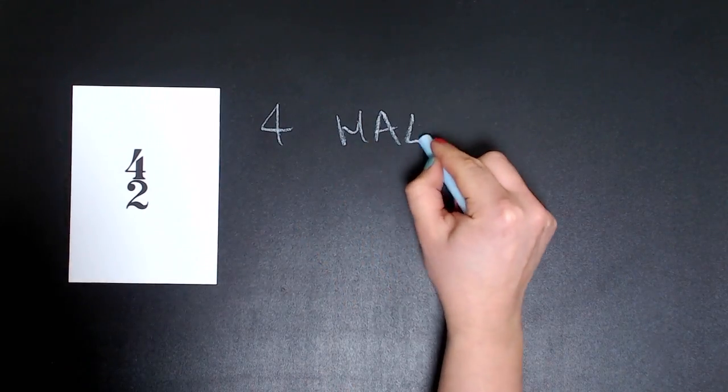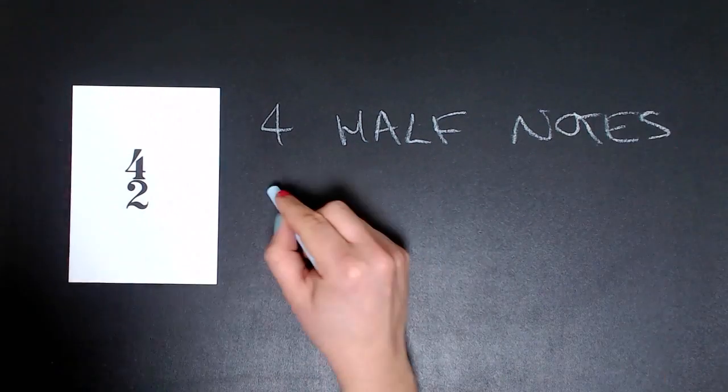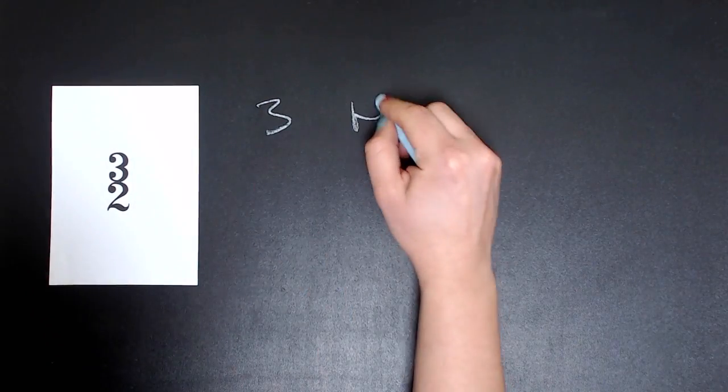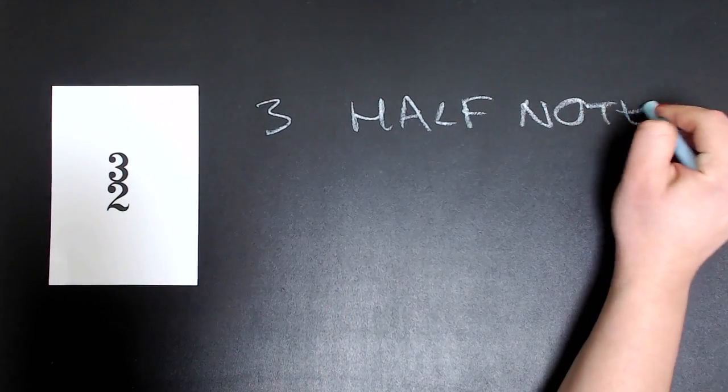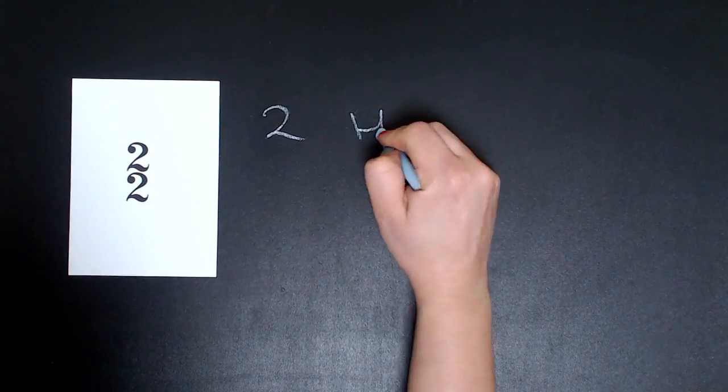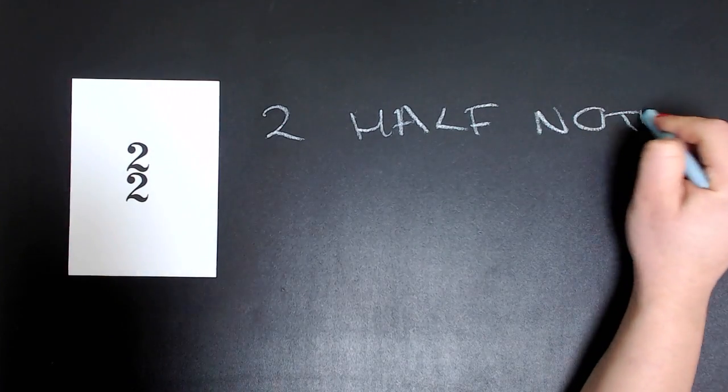4/2 means there are four half note beats in a measure. 3/2 means there are three half note beats in a measure. 2/2 means there are two half note beats in a measure.